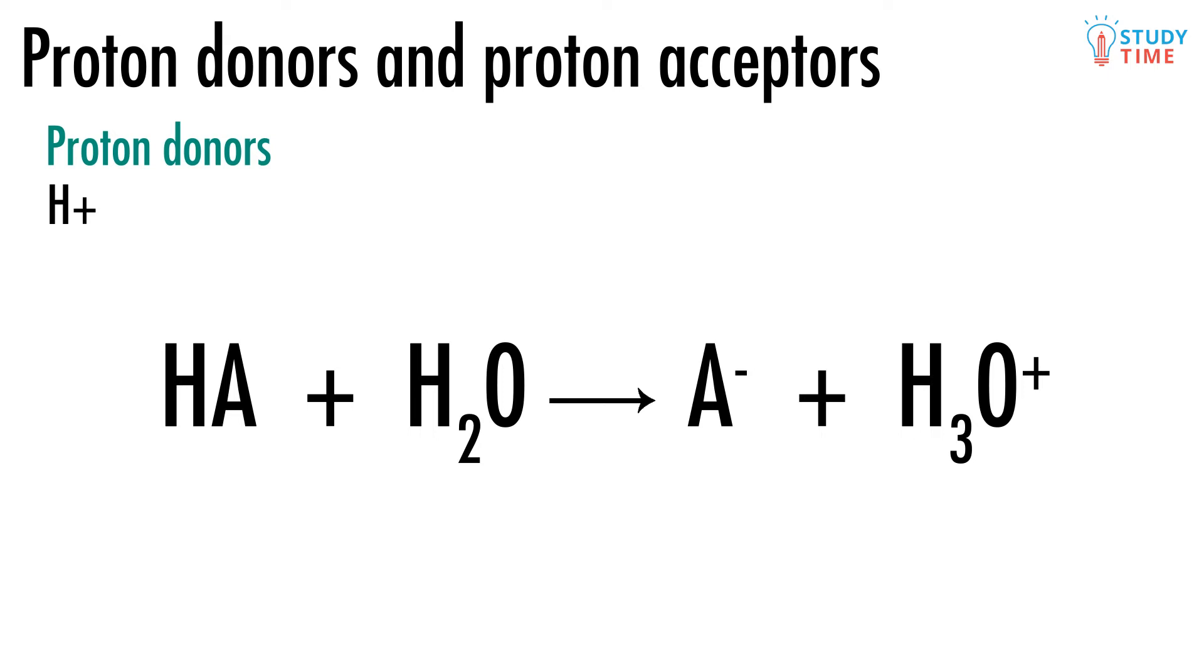The acid, HA, is donating a proton to water, and water is accepting that proton and becoming H3O+. H3O+ is called hydronium, and you can basically think of it as the thing that makes solutions acidic.